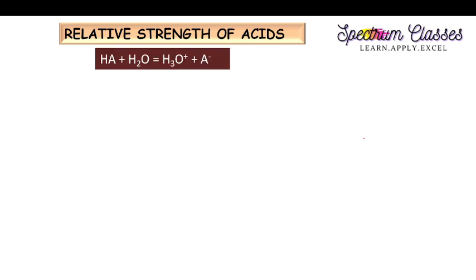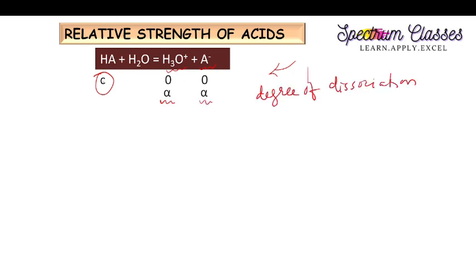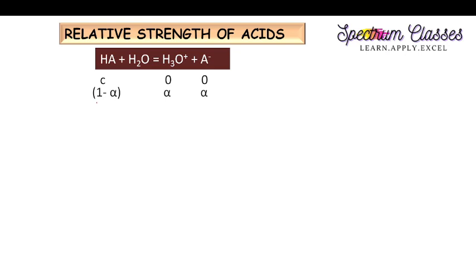Now we are going to discuss the relative strength of acids. Suppose initially the concentration of this acid is C, with no hydronium ion and no A- ion at time t = 0. After some time, the concentration of hydronium ion as well as A- ions is Cα. Multiplying by concentration C, we get these concentrations. These are the concentrations of these species after time t.